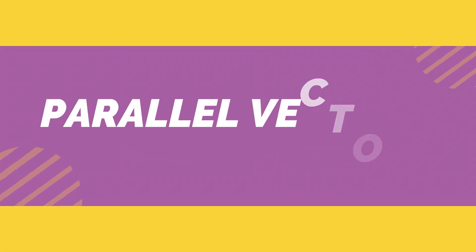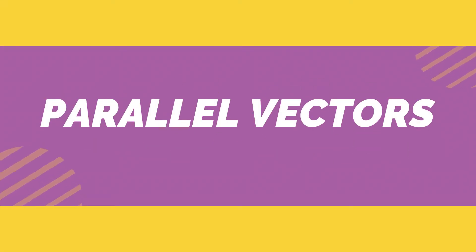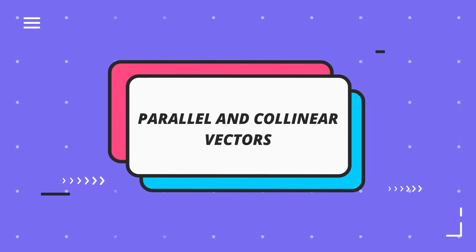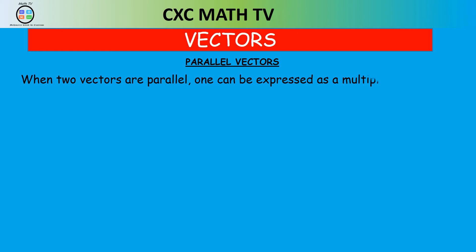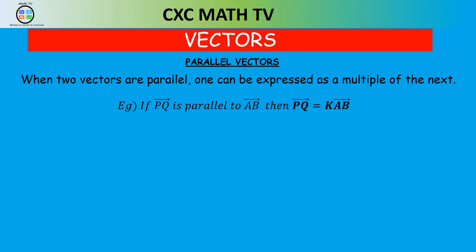Welcome to the Vectors Part 3 video. In this video we're going to be talking about parallel vectors and collinear points. When two vectors are parallel, one can be expressed as a multiple of the other. For example, if vector PQ is parallel to vector AB, then PQ is equal to some constant K times vector AB.